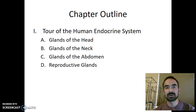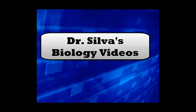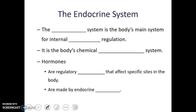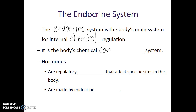In this video, we're going to take a tour of the human endocrine system, starting with the head. The endocrine system is the chemical communication system of the body, and it works through the production of hormones. Hormones are regulatory chemicals produced by the body that affect specific sites in the body. Any of the structures that produce hormones are known as endocrine glands.